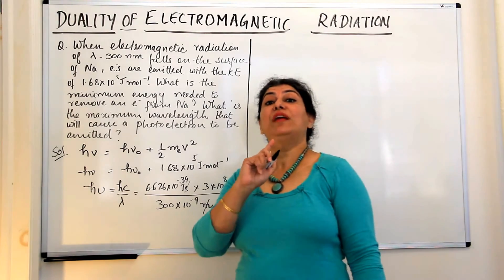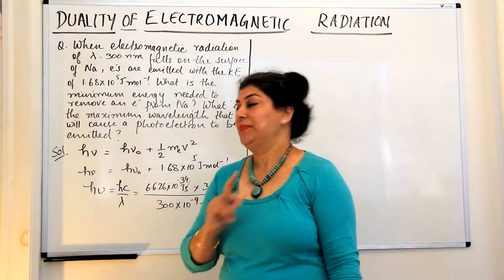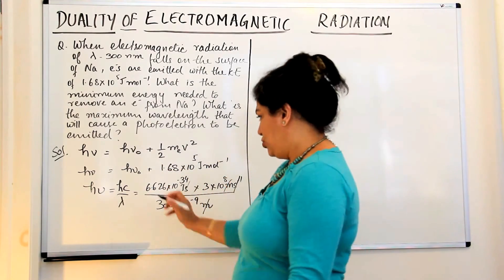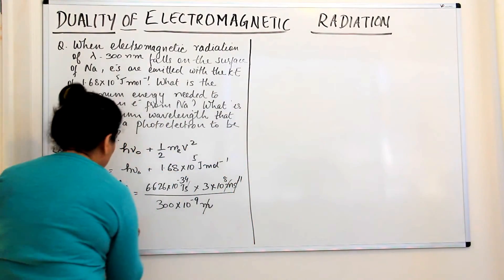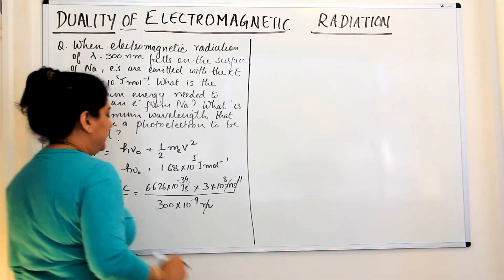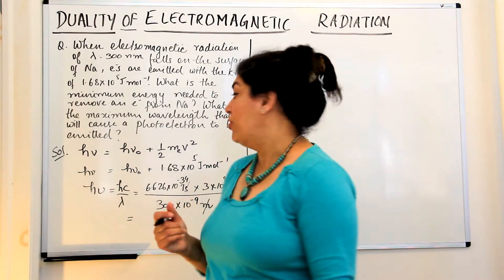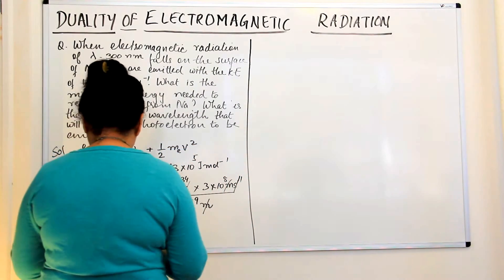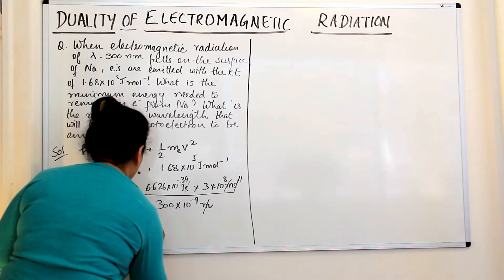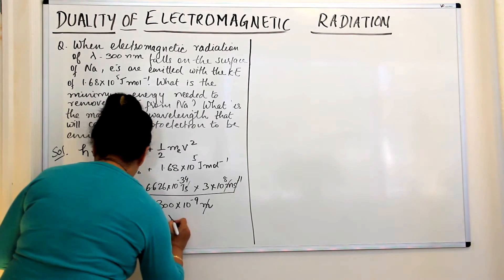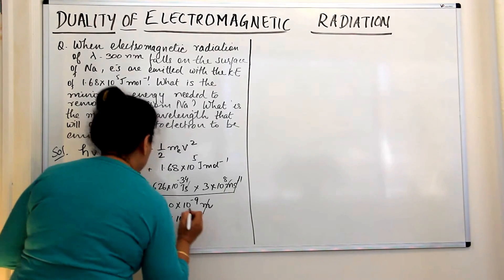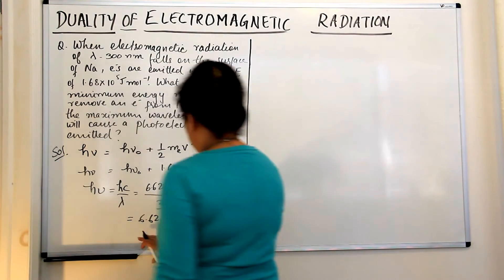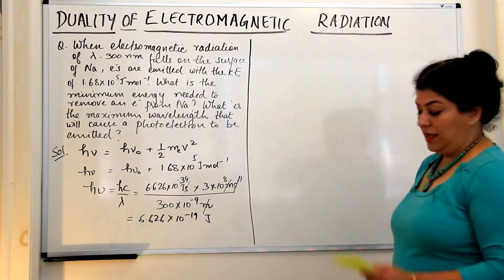This calculated energy is for one photon. When you compute hc/λ with those values, it comes out to be 6.626 × 10⁻¹⁹ joules. That is the energy of one photon.